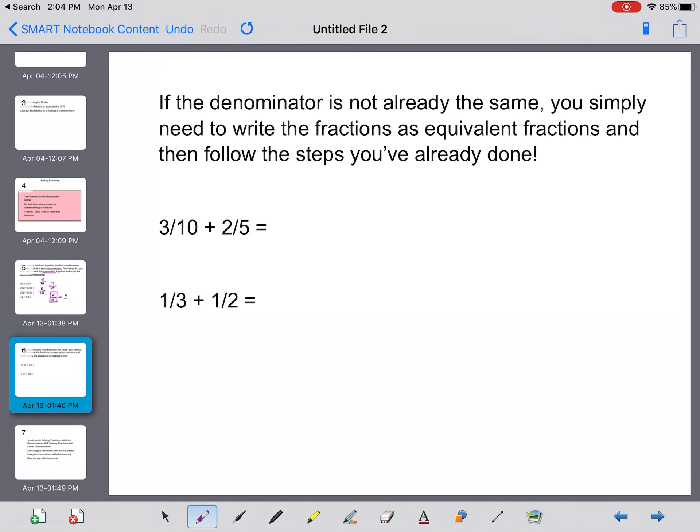So for 3 over 10 plus 2 over 5, I first need to make these two fractions equivalent. And I know I can do that by multiplying this second fraction by 2. So 2 over 5 times 2 gives me 4 over 10. And now I'm answering 3 over 10 plus 4 over 10. I know my denominator will be 10 and 3 plus 4 is 7.